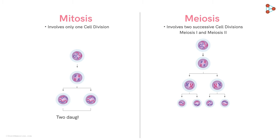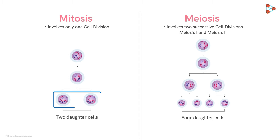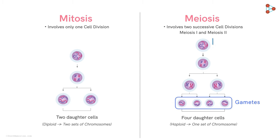Mitosis produces two daughter cells, while meiosis produces four daughter cells. Moving to the next major difference based on chromosomal number: in mitosis, the daughter cells are diploid with two sets of chromosomes, just like the parent cell. During meiosis, the daughter cells produced are haploid with only one set of chromosomes. These daughter cells, called gametes, have exactly half the number of chromosomes from the parent cells.